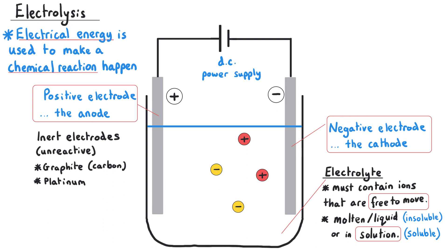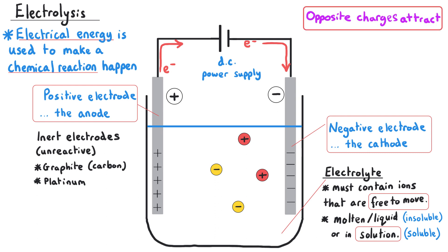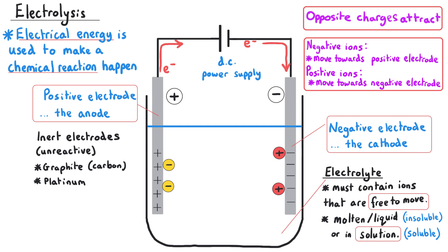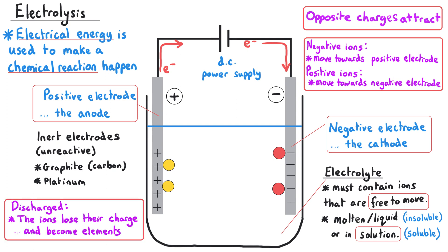We need some kind of power supply to drive this electric current, and it needs to be a direct current, because this ensures that the electrons move in one direction and build up on one of the electrodes. The electrode they build up on is the negative electrode, called the cathode. The electrode where the electrons came from is the positive electrode, called the anode. Since opposite charges attract, positive ions move towards the negative electrode and negative ions move towards the positive electrode. Both types of ions become discharged when they reach their electrode, turning them into the element the ion was made from.